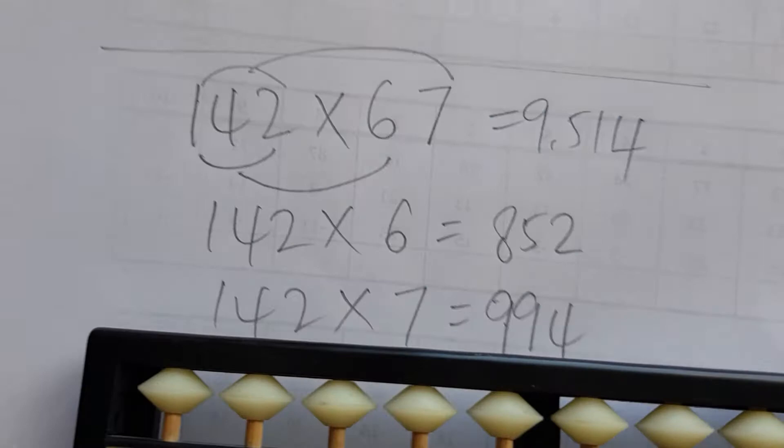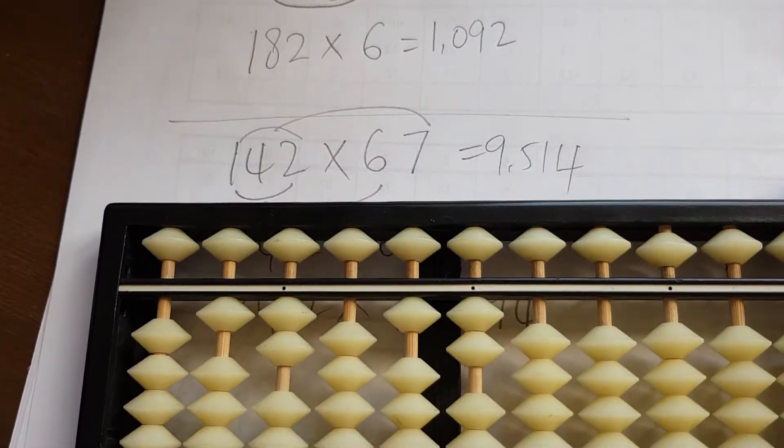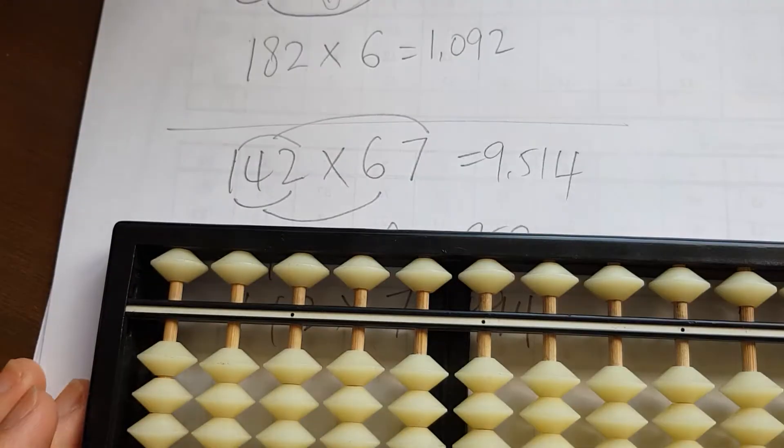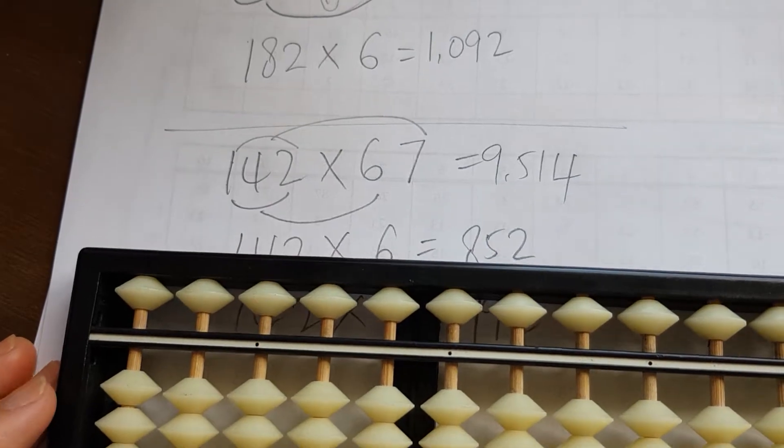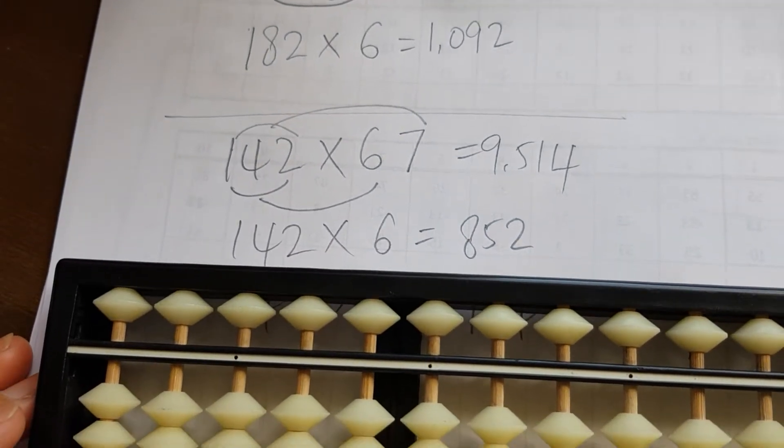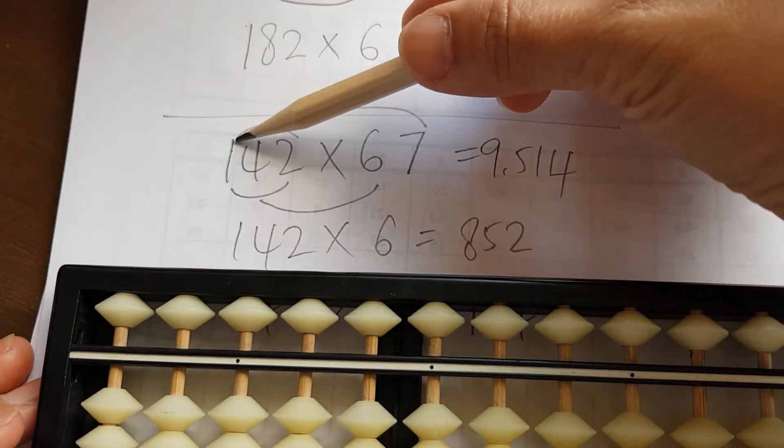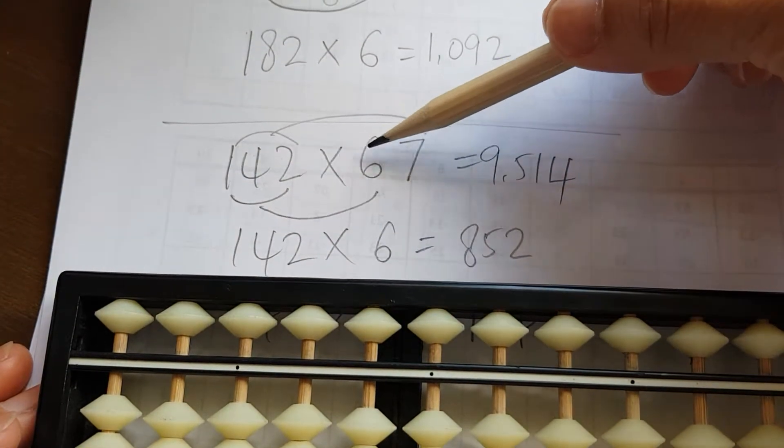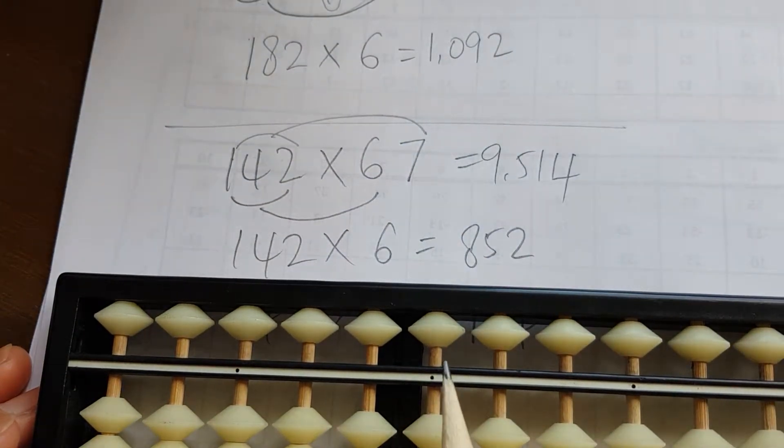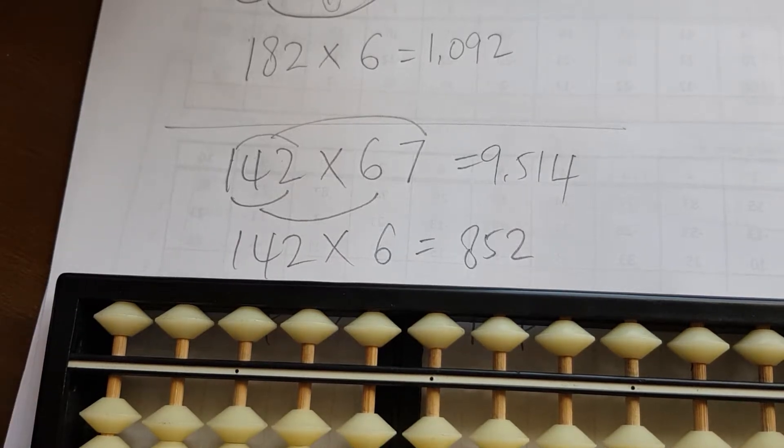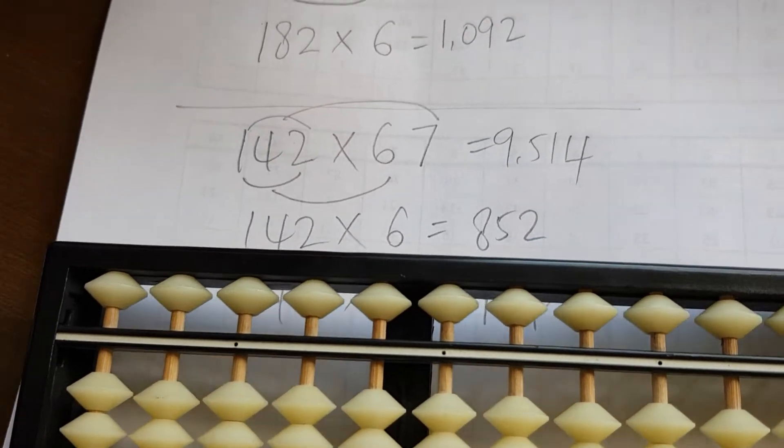The next one I'm going to work out with you is another example. You've got 142 times 67. As usual, we're going to add up the number of digits, which is three plus two, spanning across five columns—one, two, three, four, five.